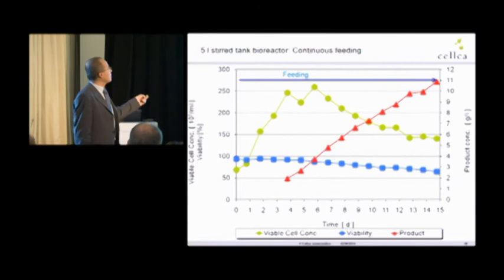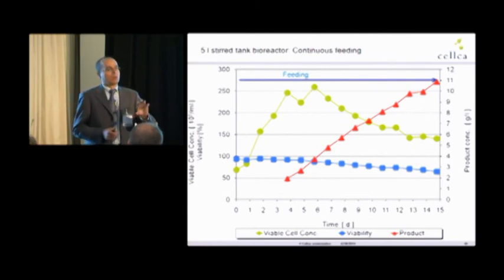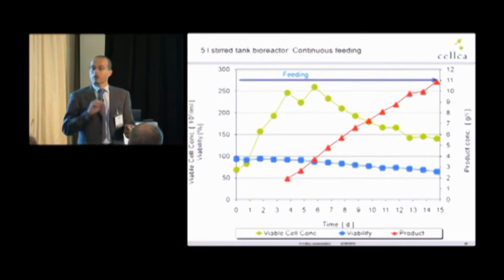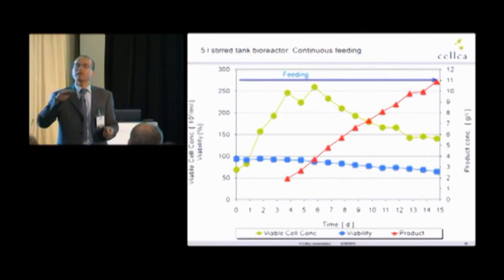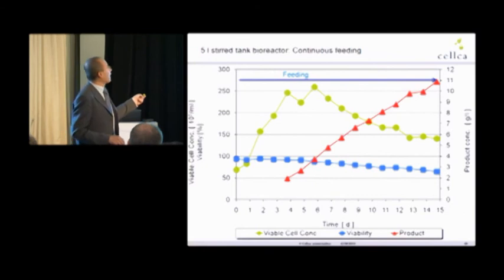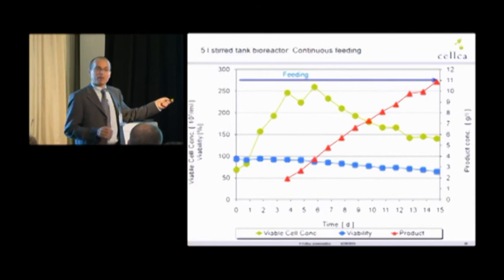After inoculation, we calculate the amount of feed, how much we should give. We adjust the pump and turn on. Continuously, the pump feeds us the needed amount of feed. That is at day zero. And then we go home. After 15 days, we come back and harvest.